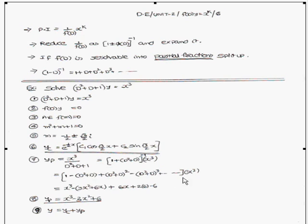In the expansion, neglect terms with d^4 and beyond. Doing the simplification, you get x³ − 3x² + 6x + 6x + 2(6) − 6. Simplifying, the particular integral is equal to x³ − 3x² + 6. Therefore the general solution y = complementary function + particular integral.